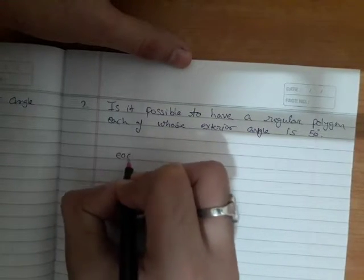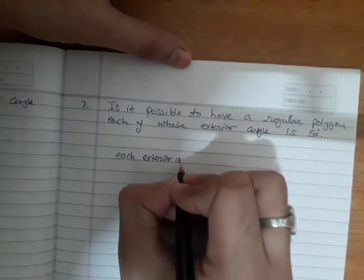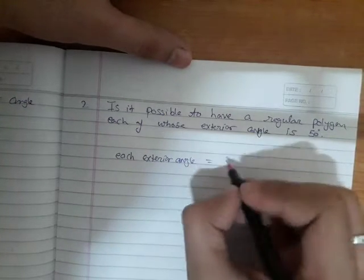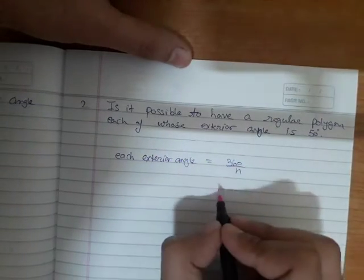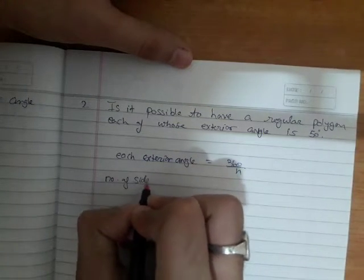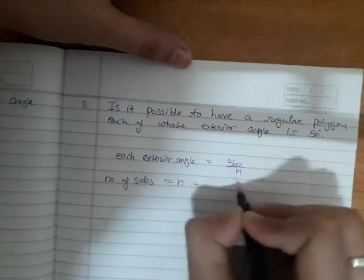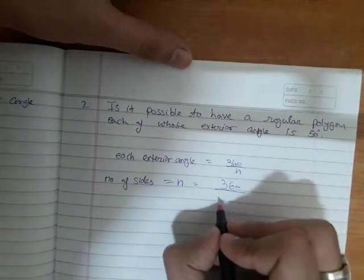The formula is 360 over n. Now we have to find n, so we can say the number of sides equals n equals 360 over each exterior angle.